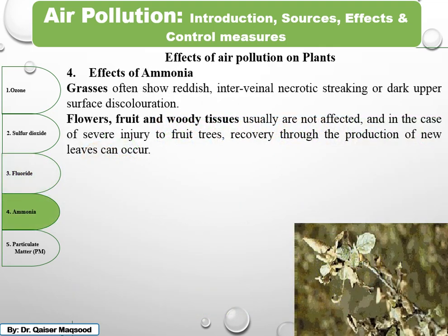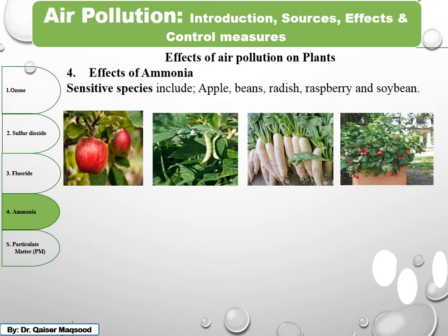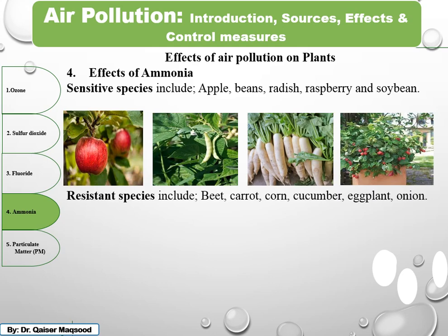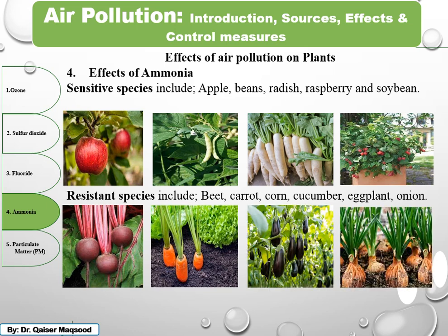Regarding the effect of ammonia: grasses often show reddish interveinal necrotic streaking — streak lines between the veins — as well as decolorization or dying, and dark upper surface decolorization. Flowers, fruits, and woody tissues are usually not affected. In cases of severe injury to fruit trees, recovery through the protection of new leaves can occur. Sensitive plants include apples, beans, radish, raspberry, and soybeans, while resistant crops include beet, carrot, corn, cucumber, eggplant, and onion.